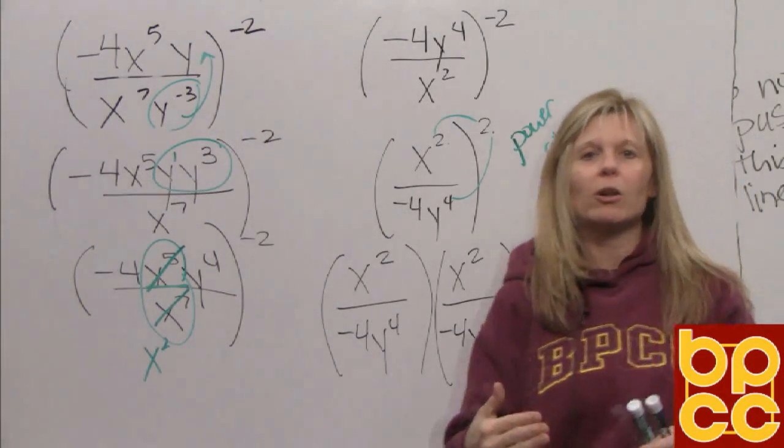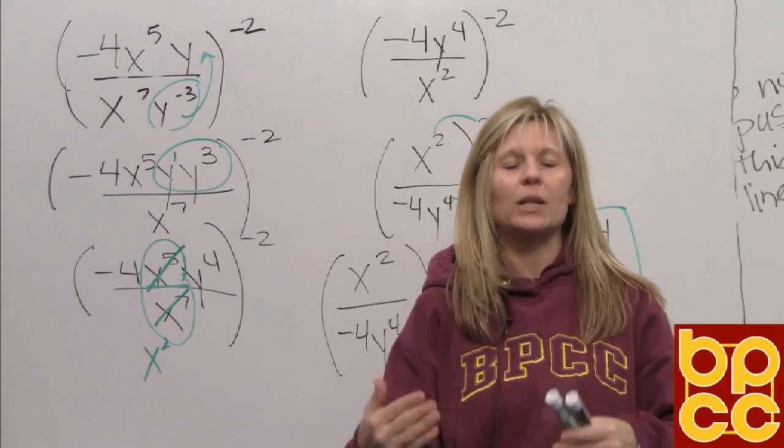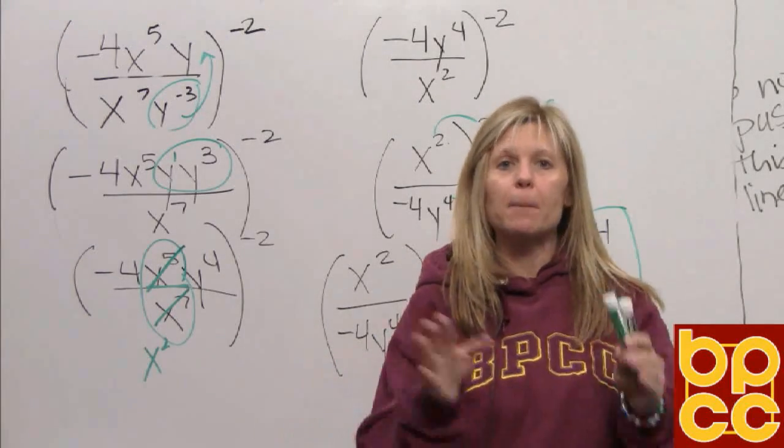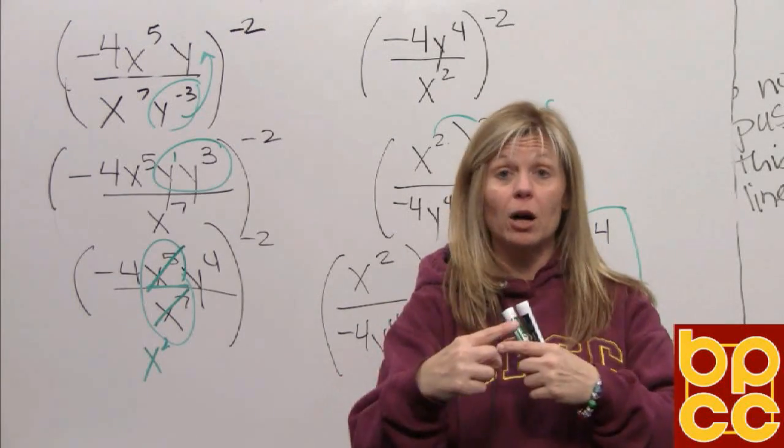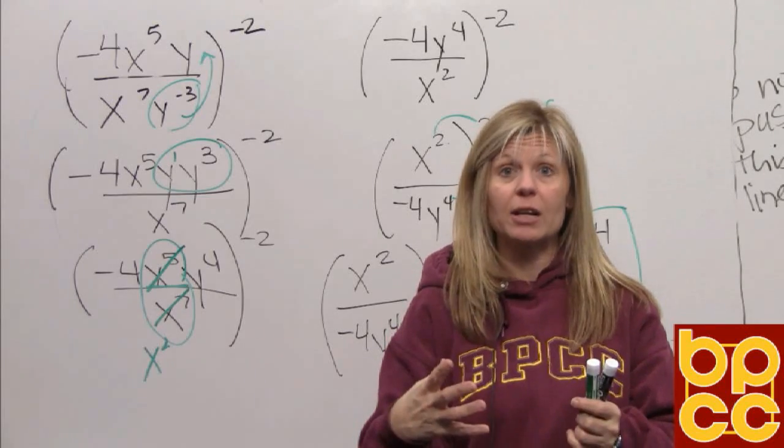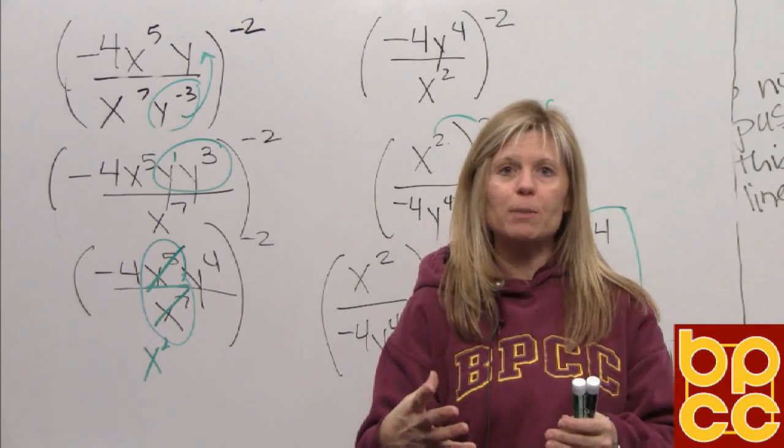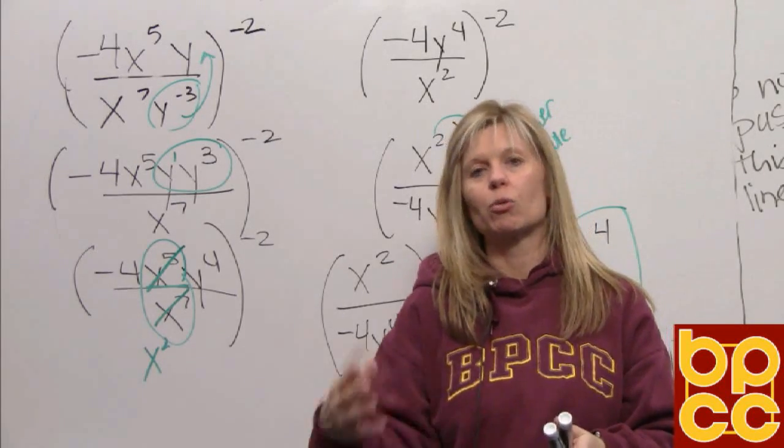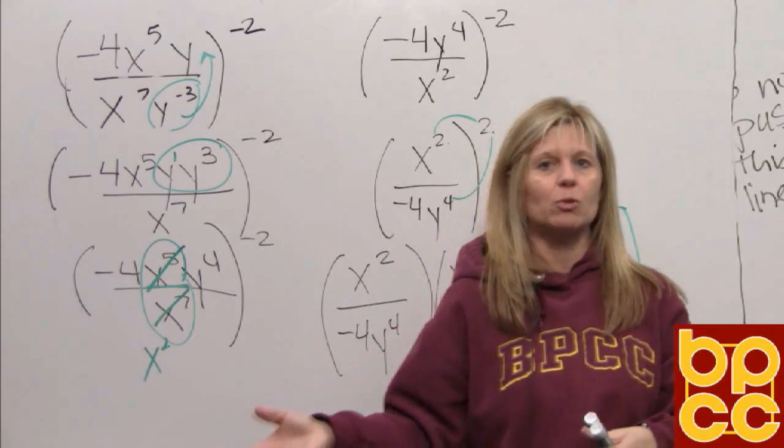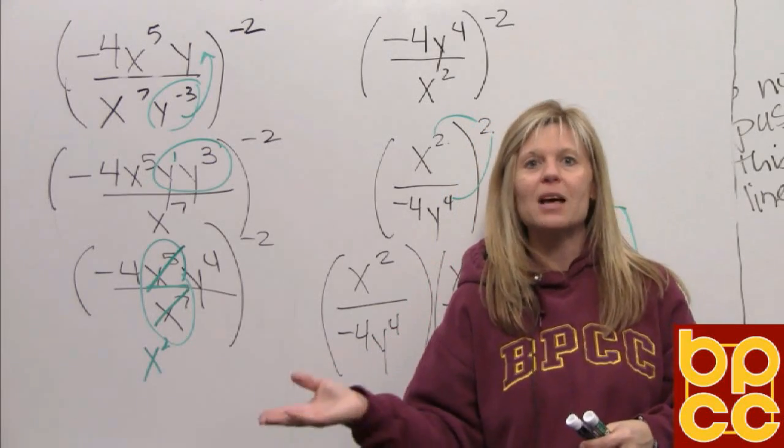So again what we learned today is that you do not work with negative exponents. You make them positive first by doing the reciprocal, flipping the base they're connected to. Once your exponents are positive then you're just using the rules we've learned in the previous four modules. Hope that helps. Have a great day.